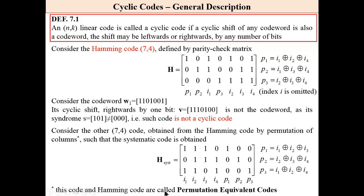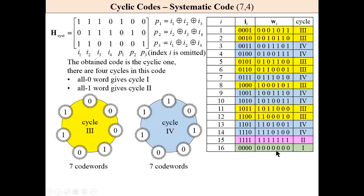This code and the Hamming code are called the permutation equivalent codes. We have this code of this parity check matrix. And then we will generate, using parity check equations, all 16 codes.